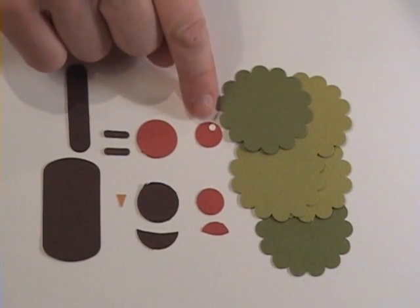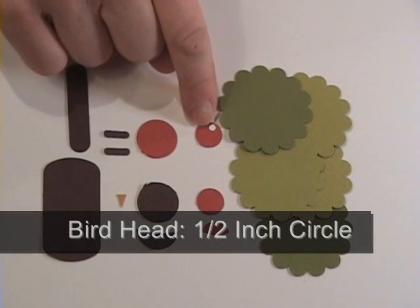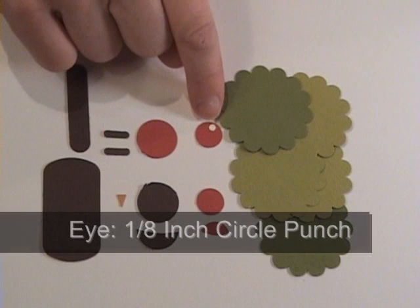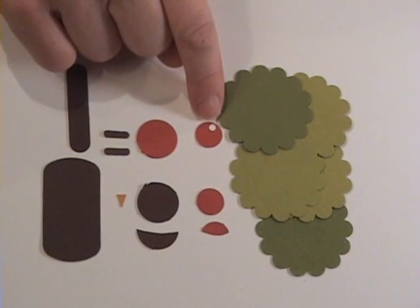You're going to need one, I used Riding Hood Red half inch circle punch for the bird head. And I used the quarter inch, sorry, one eighth of an inch circle punch, the handheld punch for the eye.